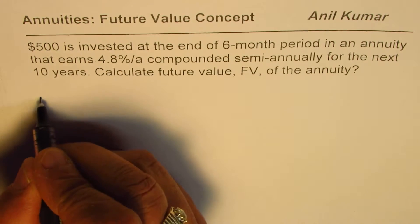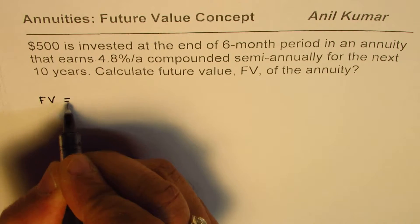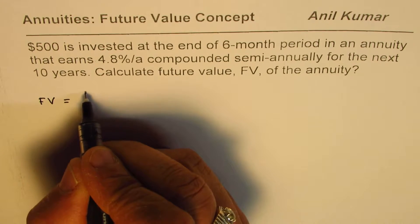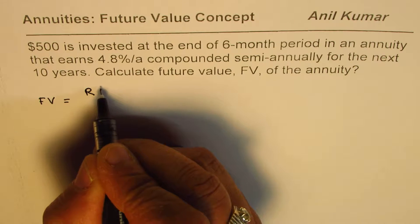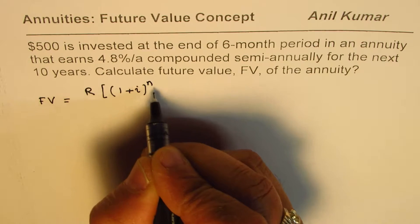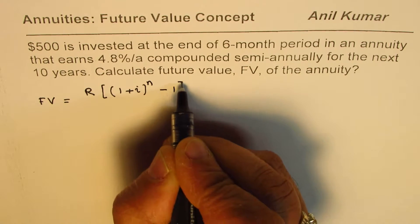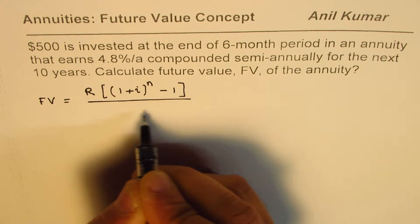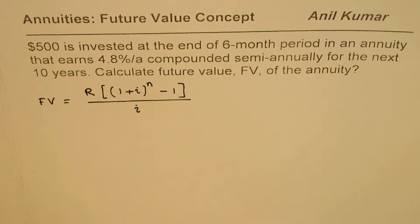Let me begin by giving you the formula for future value. Future value is the recurring amount R which we deposit, times [(1 + i)^n - 1] divided by i, where i is the interest rate.